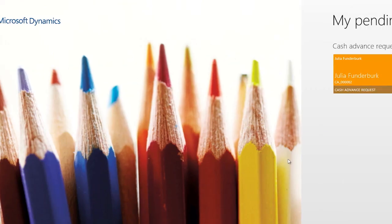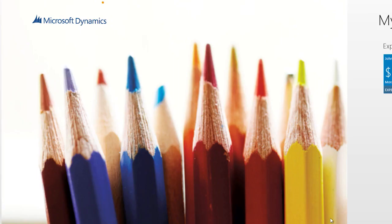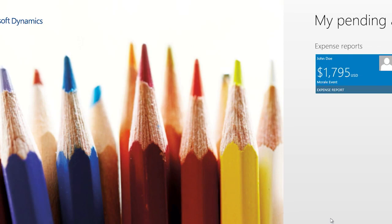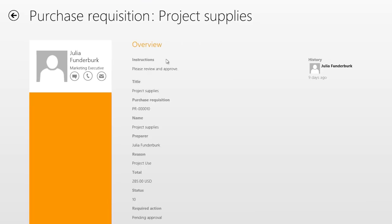Now I have 13 pending approvals. I can also do bulk approval — I select three expense reports and a cash advance request, hit the Approve button, and approve all four with a single click. Let's take a look at the purchase requisition. For expense reports and timesheets we had a lot of details, whereas for other workflow approval types there is more general detail. For those, we have an Overview section where the fields can be customized in AX so we can see different information. And if there are any attachments or SSRS reports, we see an Attachments tab next to the Overview tab.